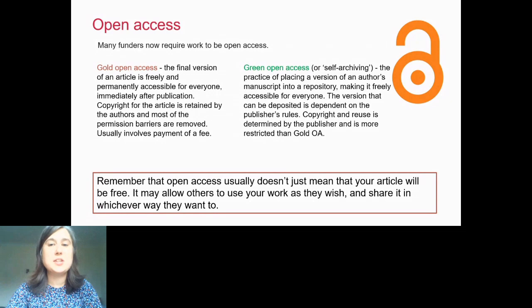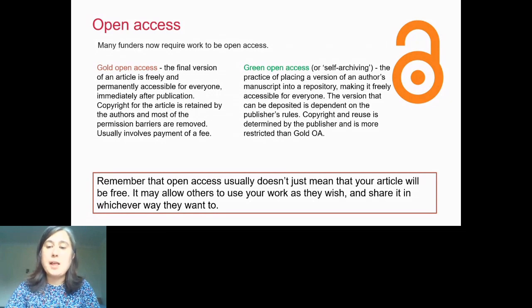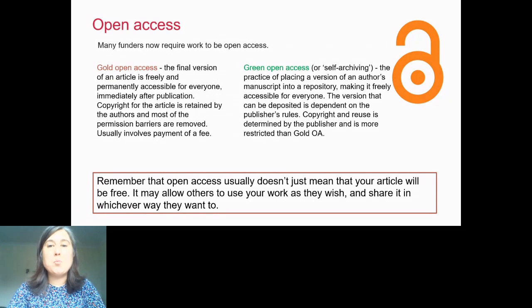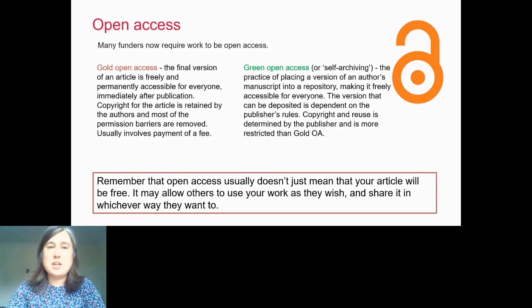Diamond is optimal for researcher and reader costs and has many practical advantages, however there may be questions about its financial sustainability, with funding coming from society funds and donor funds. Gold is good for readers and publishers and allows authors to widely share and reuse their work whilst retaining copyright. Profits generated by society publishers like the Royal Society often support other charitable activities. Green open access is the second cheapest option but is more limited in scope, and authors may have to give up their copyright.